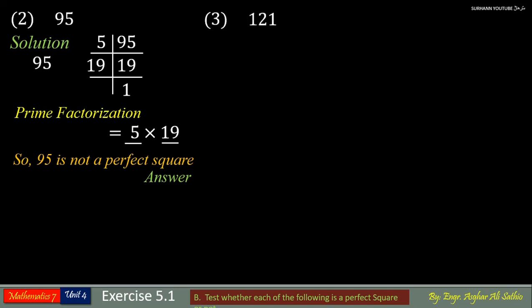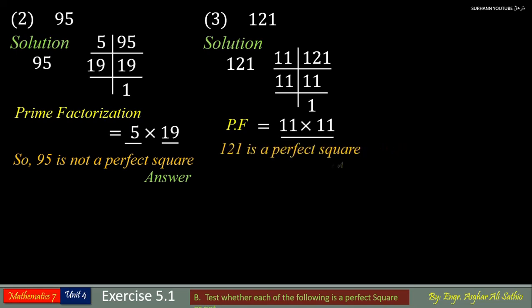Similarly, you can see problem number 3: 121. Find and list all its prime factors. Here is one pair of prime factors, so 121 is a perfect square. Now similarly try to solve all other problems by yourself. They all are very easy.